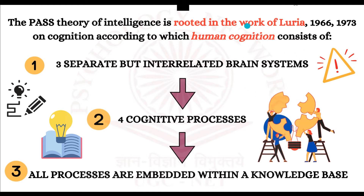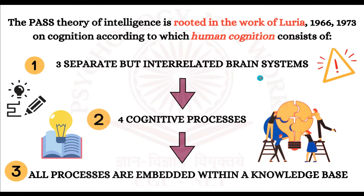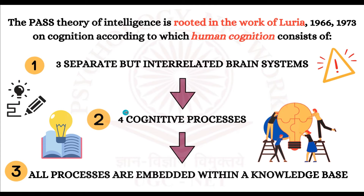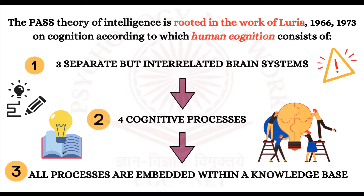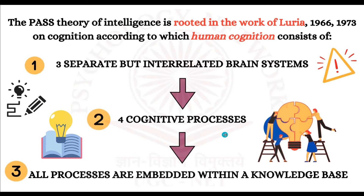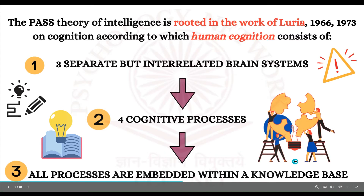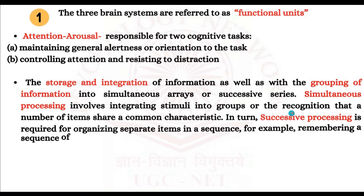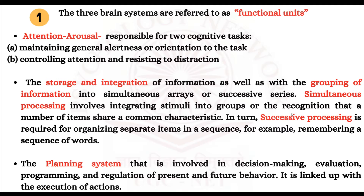There are three brain systems, which we will discuss shortly. The second component is four cognitive processes. The third is that all four cognitive processes are embedded in a knowledge base.